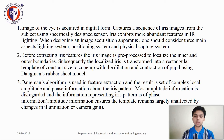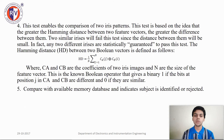Daugman's Rubber Sheet model or algorithm is used in feature extraction and results in a set of complex local amplitude and phase information about the iris pattern. This test enables the comparison of two iris patterns and is based on the idea that the greater the Hamming distance between two feature vectors, the greater the difference between them. Two similar irises will fail this test since the distance between them will be small, while any two different irises are statistically guaranteed to pass this test.